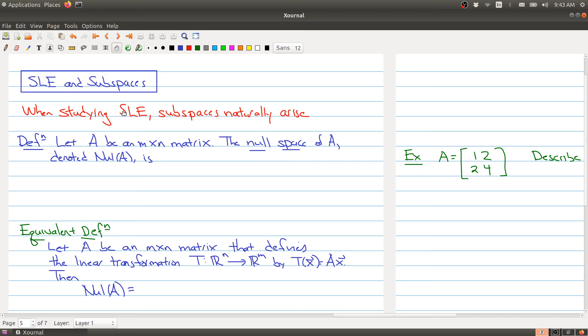So the first thing that we're going to start with is the notion of a null space of a matrix. Let A be an m by n matrix. The null space of A, denoted Null(A), is the set of all vectors in R^n such that A times x is equal to 0. So one way to think of Null(A) is the set of all solutions to the equation Ax = 0.